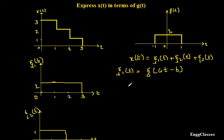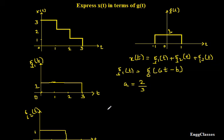How do I find a? The best way is: a equals the width of the original signal divided by the width of the required signal. The original signal g(t) exists from minus 1 to 1, so its width is 2. The required signal g1(t) exists from 0 to 3, so its width is 3. Therefore a = 2/3.